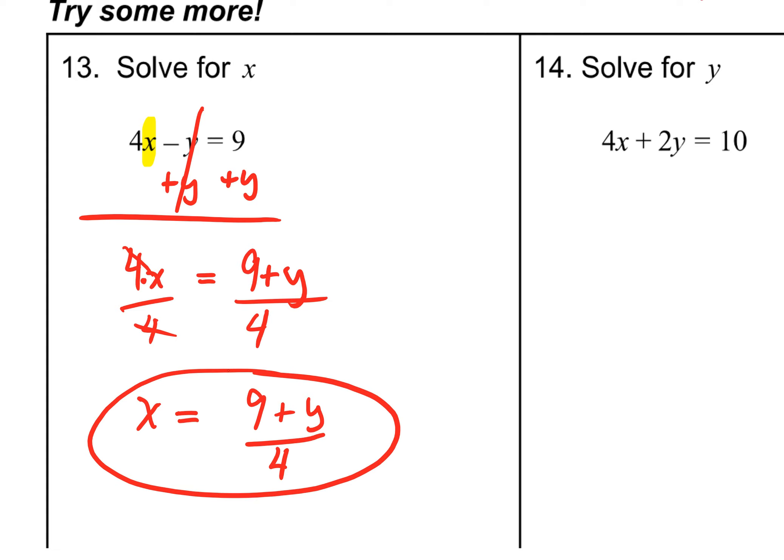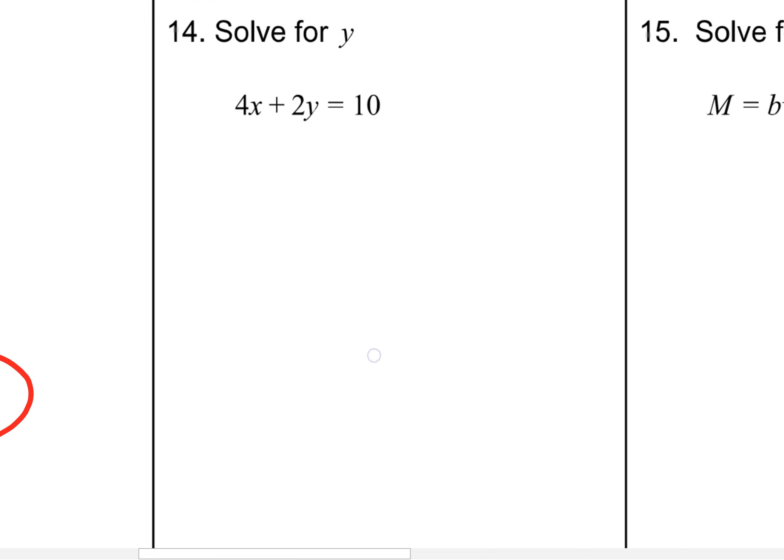Let's take a look at a very similar question, number 14. Trying to get y alone. 2 is multiplied to y, but 4x is actually added to it. And that 4x, by the way, of course, is a positive. That's why we're going to subtract 4x from both sides. You're going to get rid of that term that was being added.